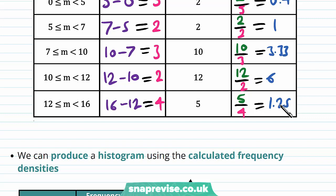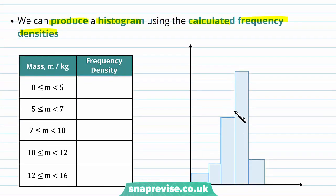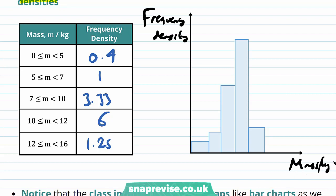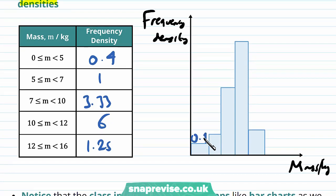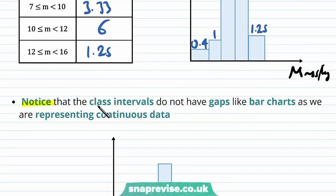Now we have our frequency densities — 0.4, 1, 3.33, 6 and 1.25 — and we can produce a histogram by plotting frequency density against mass in kilograms. For our bars the heights are 0.4, 1, 3.33, 6, and 1.25. Notice that the class intervals do not have gaps, unlike bar charts, because we are representing continuous data.